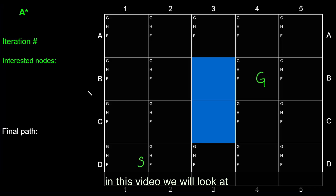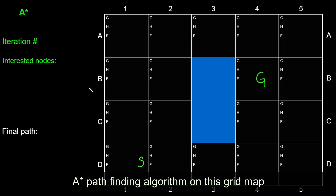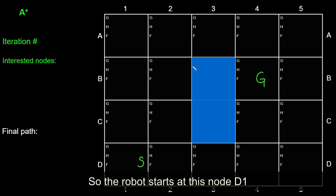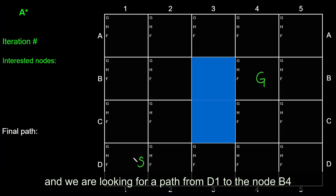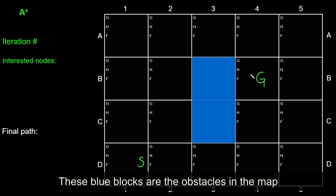Hi everyone! In this video, we will look at a step-by-step demonstration of the A* pathfinding algorithm on this grid map. The robot starts at node D1, and we are looking for a path from D1 all the way to node B4. The blue blocks are the obstacles in the map.